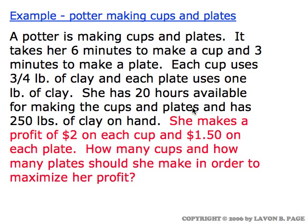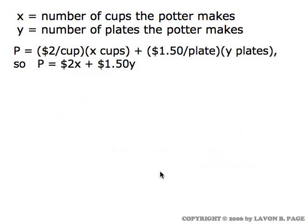We have information about how profitable it is to make a cup or a plate. She makes two dollars on each cup and a dollar fifty on each plate. The next step is to quantify what it is we're trying to maximize — in this instance, it's profit. She makes $2 per cup and X is the number of cups; she makes $1.50 on each plate and Y represents the number of plates. So her profit function is 2X plus 1.5Y.